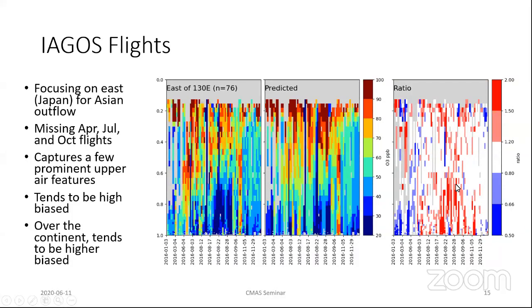When we look at the ratios again, there's a lot of scatter. It's hard to really pick out exactly what's going on, but you do see there tends to be some high bias in the ozone coming out during the summer.